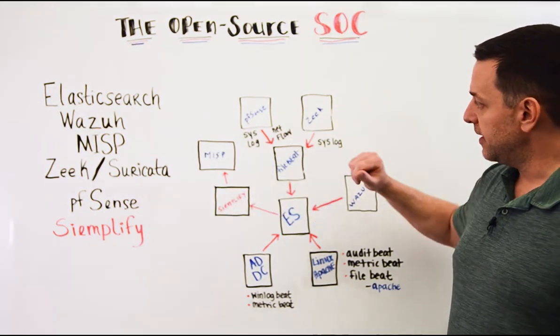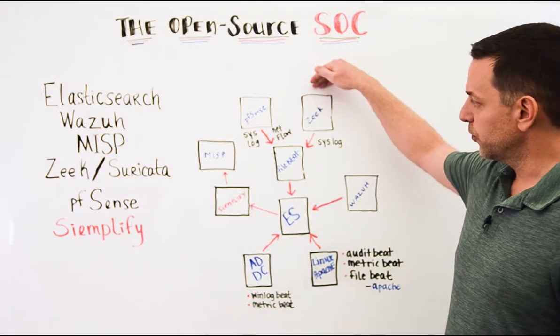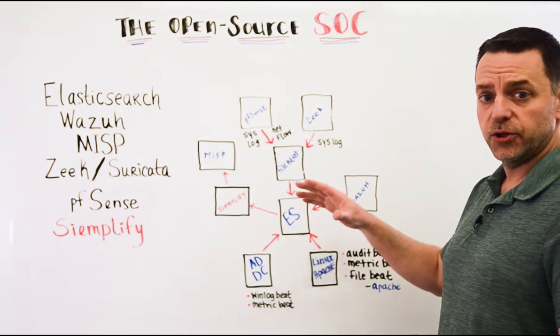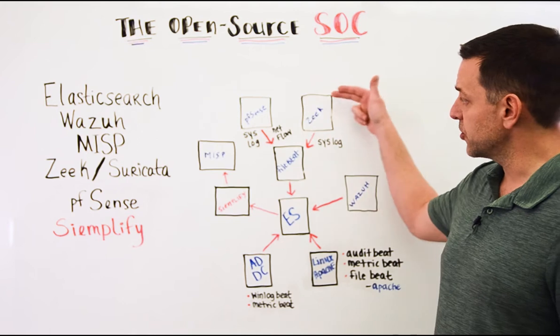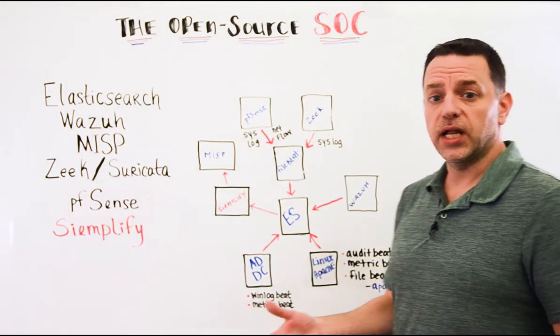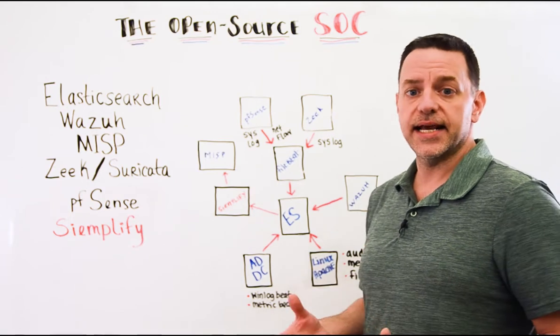We've got Zeek and PFSense running over here at the perimeter feeding both Syslog and NetFlow data into FileBeat. And the beautiful thing is that there is already a Zeek module for FileBeat which will normalize all of our data into the ECS format.